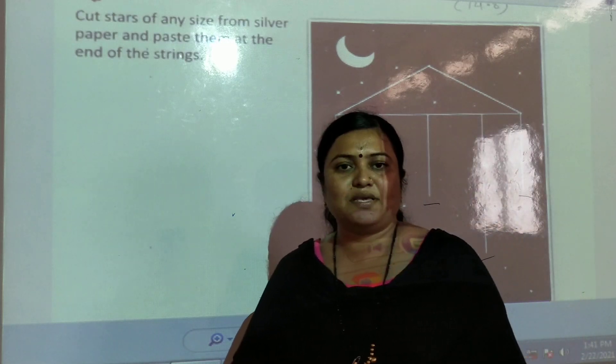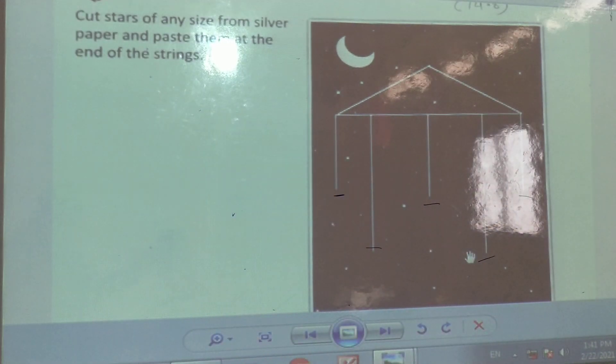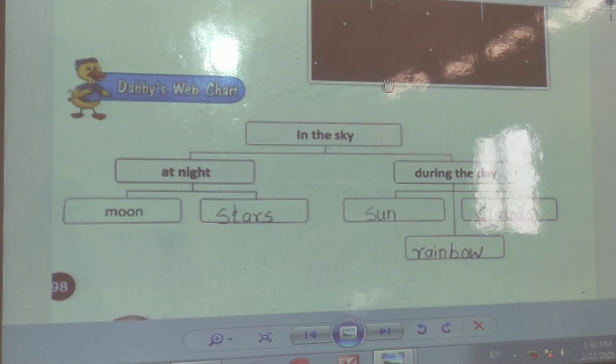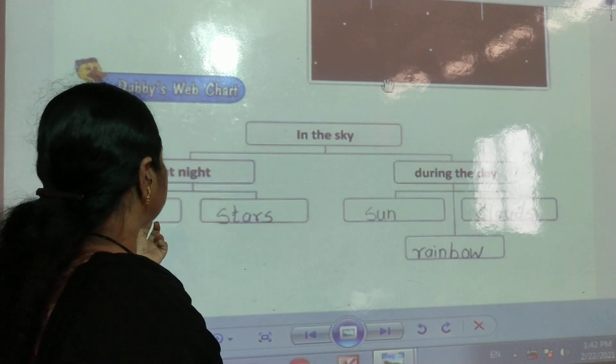So next, Daddy's web chart. So children, here is one web chart. Daddy's web chart in the sky.